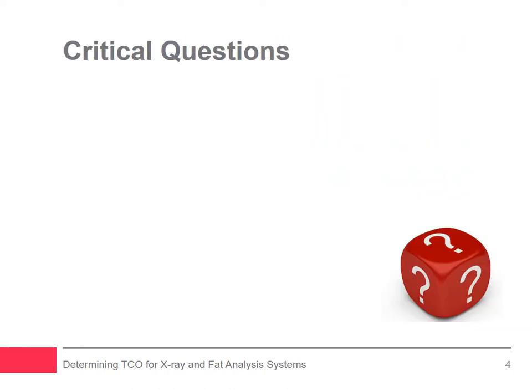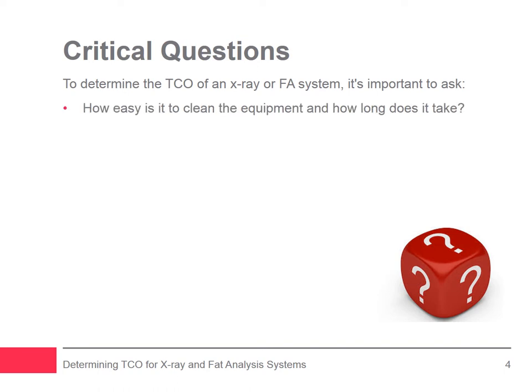TCO can be determined by asking and answering several key questions. First, it's important to calculate how much it costs to buy a system and how often components should be replaced. It's also important to gain answers to the following questions: How easy is it to clean the equipment and how long does it take? How many preventive maintenance routines are needed annually?